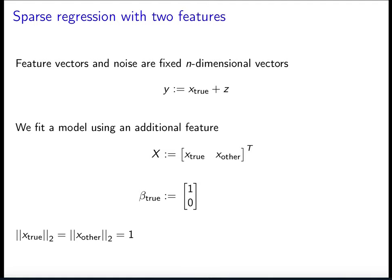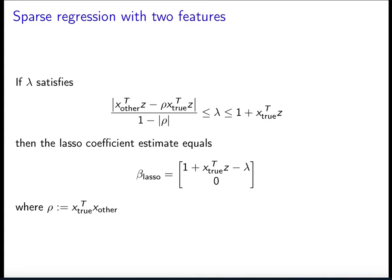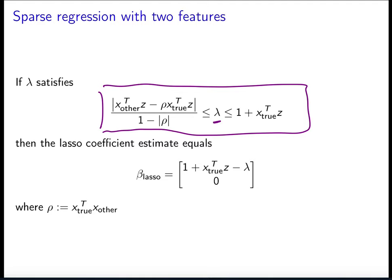Now we're going to try to prove that this is the case for this very simple model. We're going to assume there's deterministic noise — so the noise is no longer going to be random — and make some assumptions on the deterministic noise. We're going to fit a model that has the additional feature xOther and the true vector equation. We're also going to assume that the two features are normalized so that they have L2 norm equal to 1. We're going to prove that if lambda is in a certain range, then the lasso coefficient estimate is equal to a specific sparse vector.